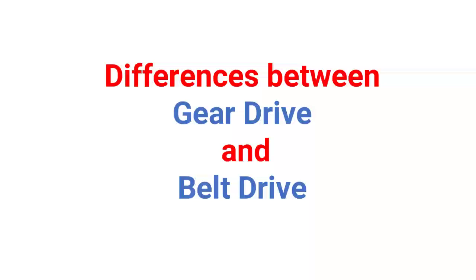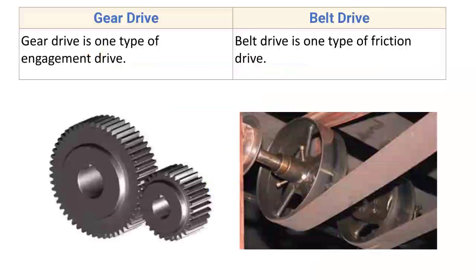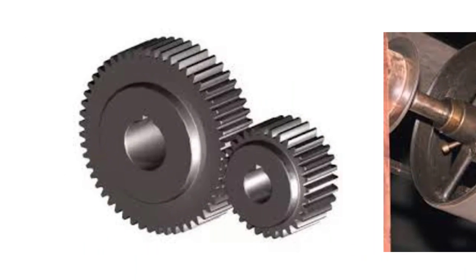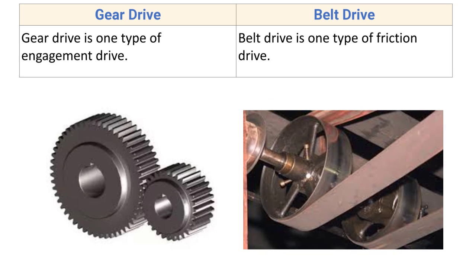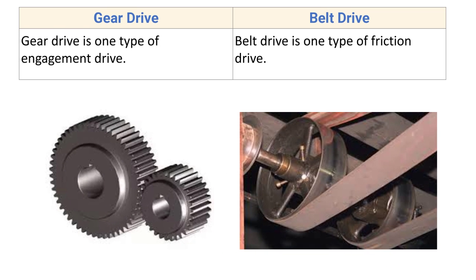In this video we will discuss the differences between gear drive and belt drive. The very first difference: gear drive is one type of engagement drive. Here you can see an example of gear drive. The motion is transmitted from the driver to the driven by means of successive engagement and disengagement of the teeth, and that is why gear drive is a type of engagement drive.